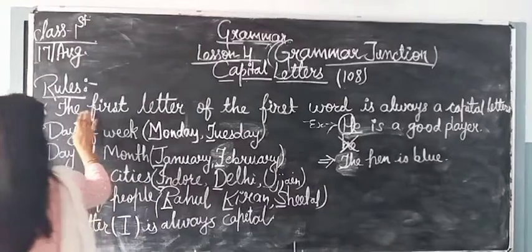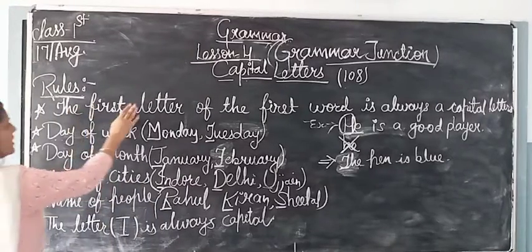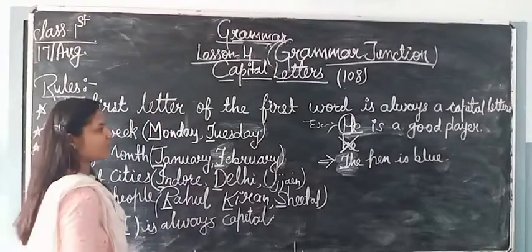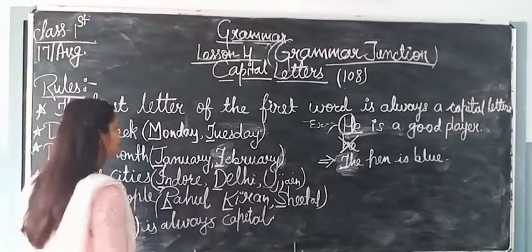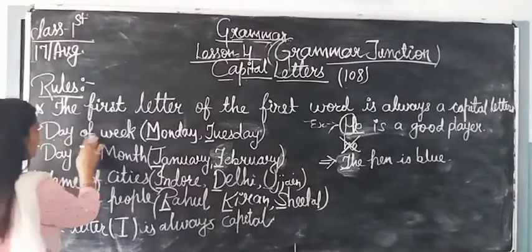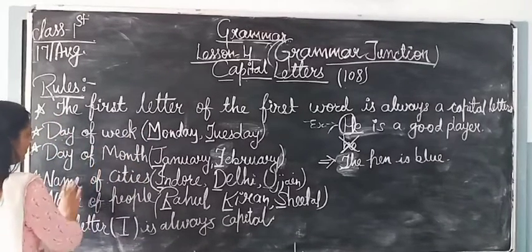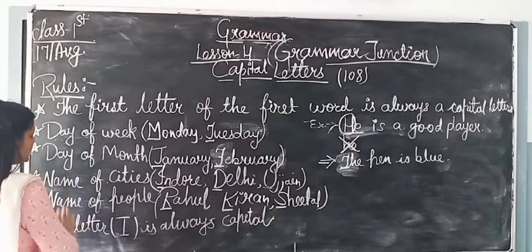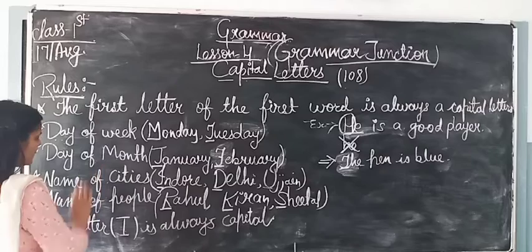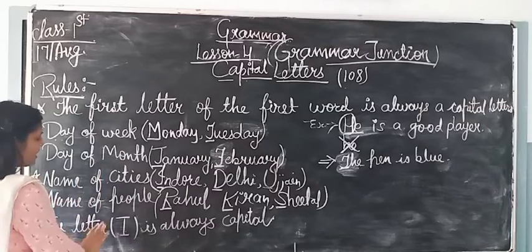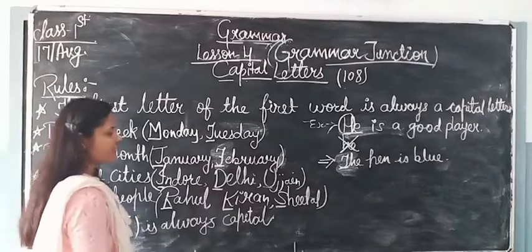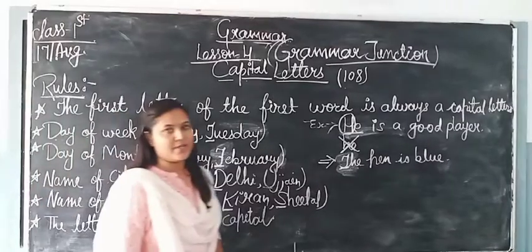So these are your rules. First rule: first letter of the first word is always capital. Day of week name is capital. Day of month is capital. Name of cities is capital. Name of people is capital. And the letter I is always capital.